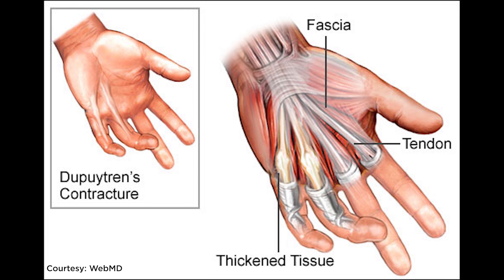The timeline for developing contracture in Dupuytren's is variable. Some patients will have nodules or cords for years or even decades without any progression of disease, and then some patients will have rapid progression of contracture over a period of even months.